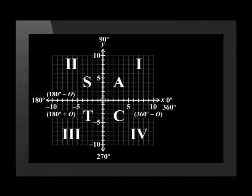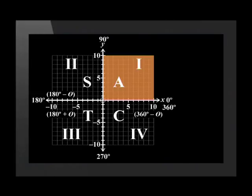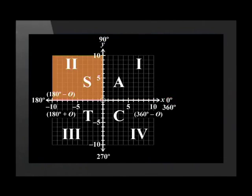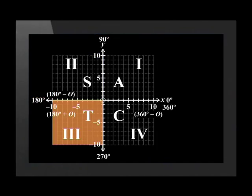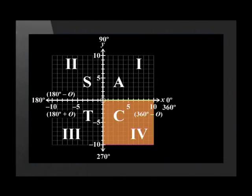If a terminal arm or radius falls in the first quadrant, the angle between the x-axis and the line will be between 0 and 90 degrees. If it falls in the second quadrant, the angle will be between 90 and 180 degrees. In the third quadrant, the angle will be between 180 and 270 degrees. Lastly, in the fourth quadrant, the angle will be between 270 and 360 degrees. We use the position of the terminal arm on the Cartesian plane to determine how to reduce the angle to an acute angle.